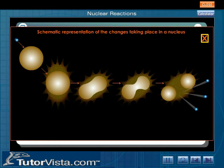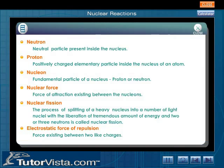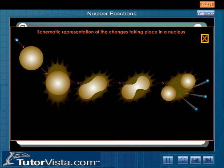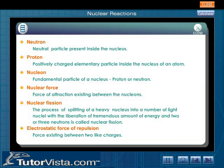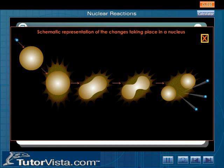Due to the constriction, the distance between the nucleons increases and the electrostatic force of repulsion increases. This increase in electrostatic force of repulsion deepens the constriction further and eventually the nucleus splits, releasing two or three neutrons.